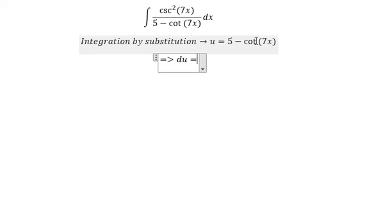This is about cotangent, so you get the positive, and we have 7 cosecant of 7x to the power of 2, dx.